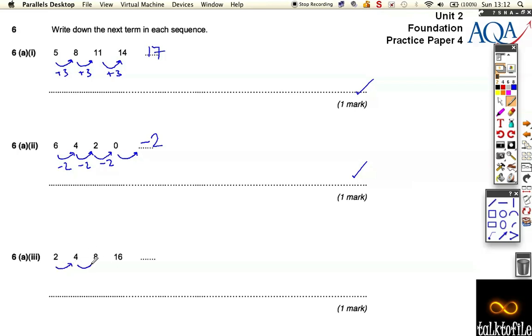This one, although this goes up by two here, this goes up by four, this goes up by eight. Well, it's actually doubling each time. Each time it's doubling, so it means that this one's going to be 32. And you've got to spot that, so don't just think they add or subtract each time because they can double.